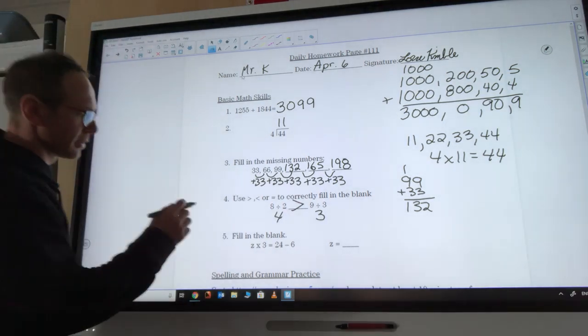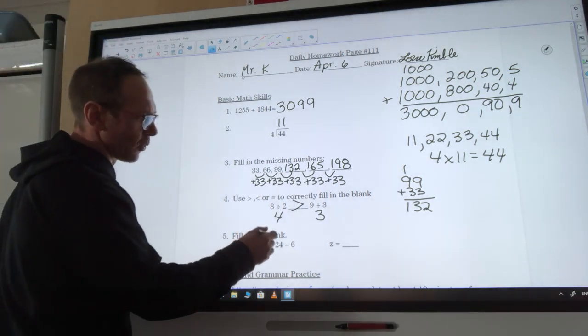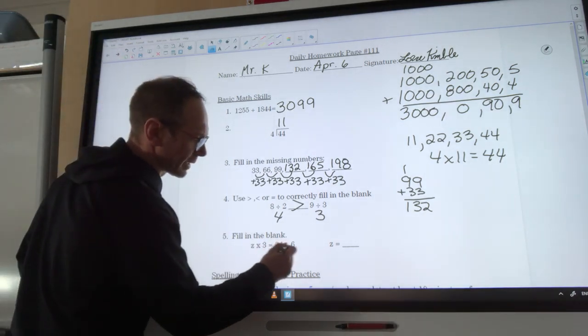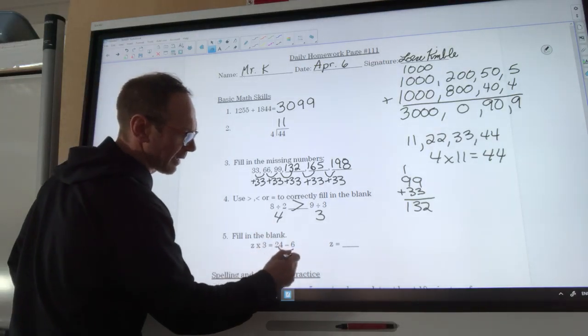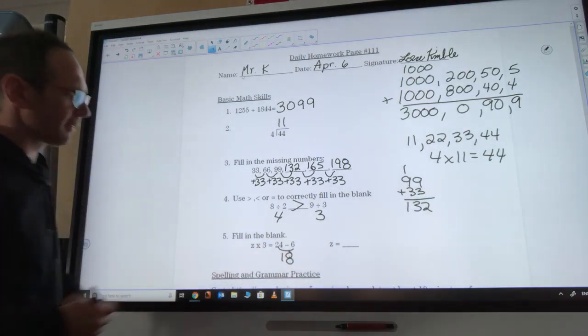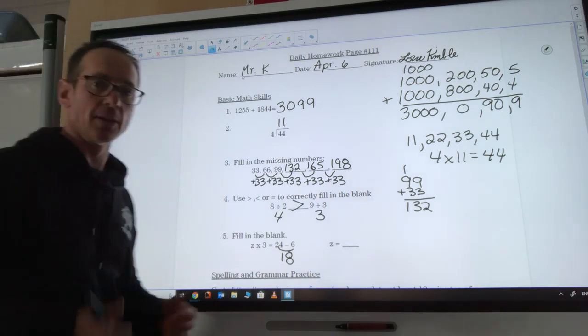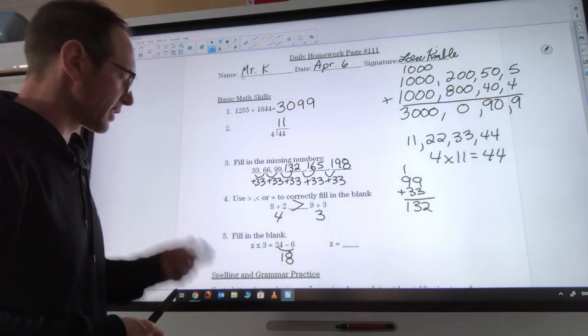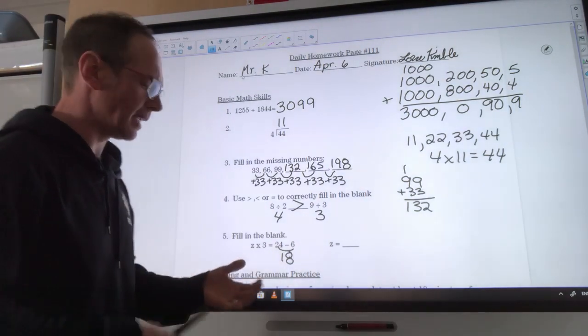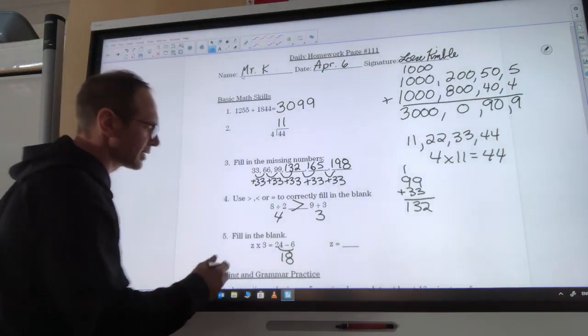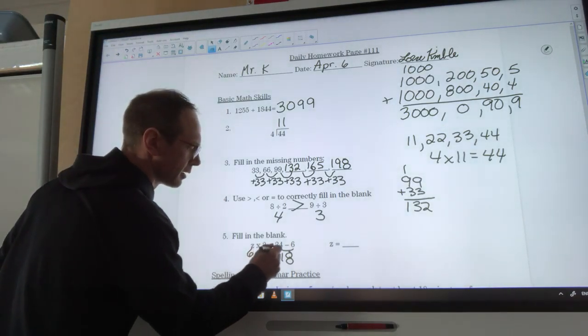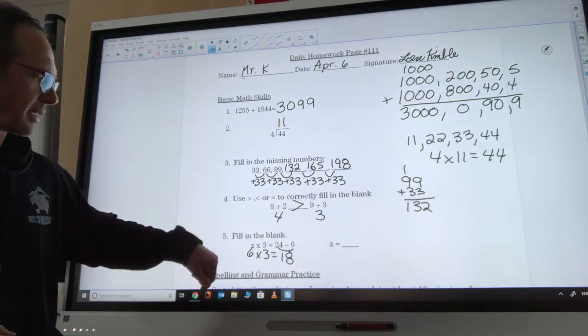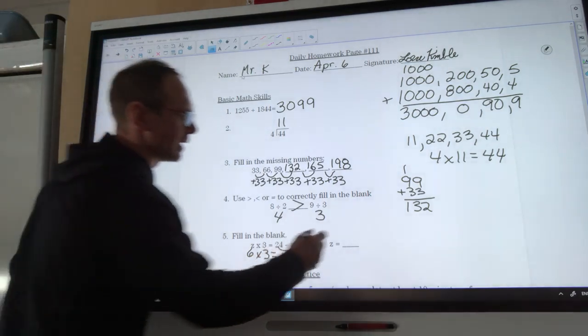Our last question is this, z times 3 is equal to 24 minus 6. The first step of doing this is getting this 24 minus 6 taken care of. So 24, if we take away 6, we'll be left with 18. Now we need to figure out what times 3 equals 18. Well, if I look at my multiples of 3, they go 3, then 6, then 9, then 12, then 15, then 18. Oh, it takes 6 steps to get to 18. So 6 times 3 is 18. So our z would have to be 6.